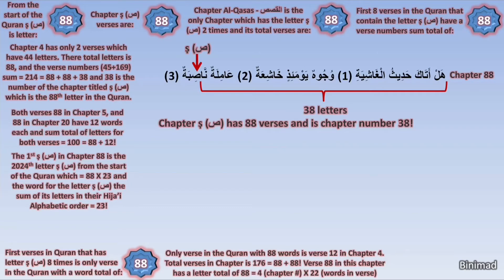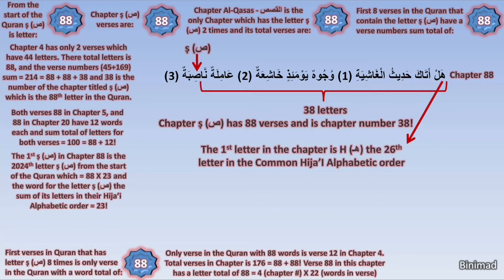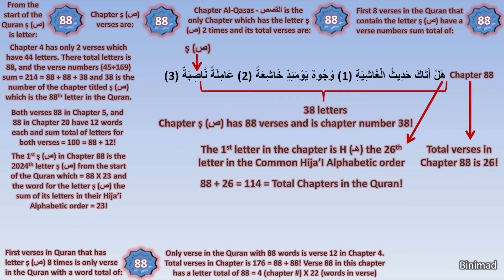Chapter Saad has a total of 88 verses. Looking even closer at chapter 88, we notice it starts with the letter Ha — like the English H. The letter Ha is the 26th letter in the common Hijai alphabetic order, and the surprise is that chapter 88 has a total of 26 verses. So chapter 88 has 26 verses, and both numbers have been seen to clearly be highlighted. Amazingly, 88 plus 26 equals 114, which is the total number of chapters in the Quran.